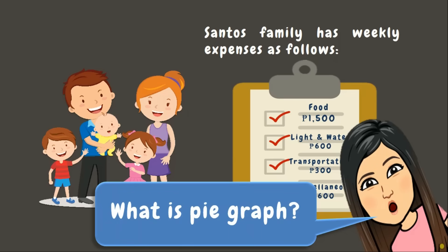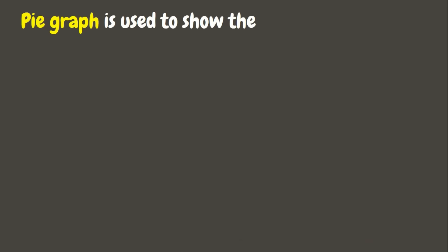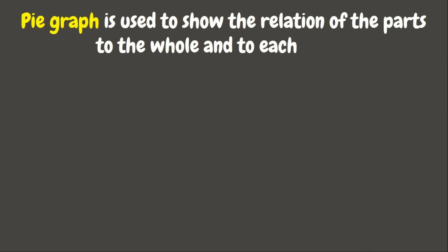But wait, do you know what a pie graph is? A pie graph is a type of graph which is used to show the relation of the parts to the whole and to each other. A pie graph is in the shape of a circle.